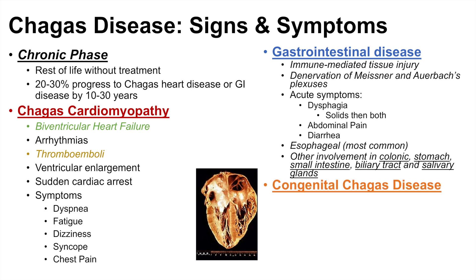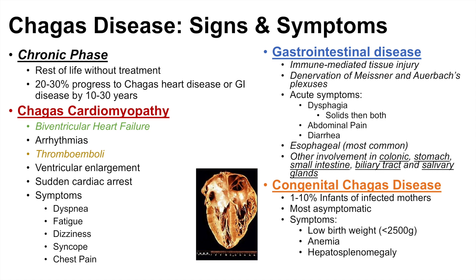Mothers infected with Chagas disease can pass it on to their baby — about 1 to 10 percent of infants of infected mothers develop congenital Chagas disease. Most are asymptomatic, but some symptoms include low birth weight (usually less than 2,500 grams), anemia, and hepatosplenomegaly. These conditions — Chagas cardiomyopathy, gastrointestinal disease, and congenital Chagas — will be covered in more detail in another lesson.